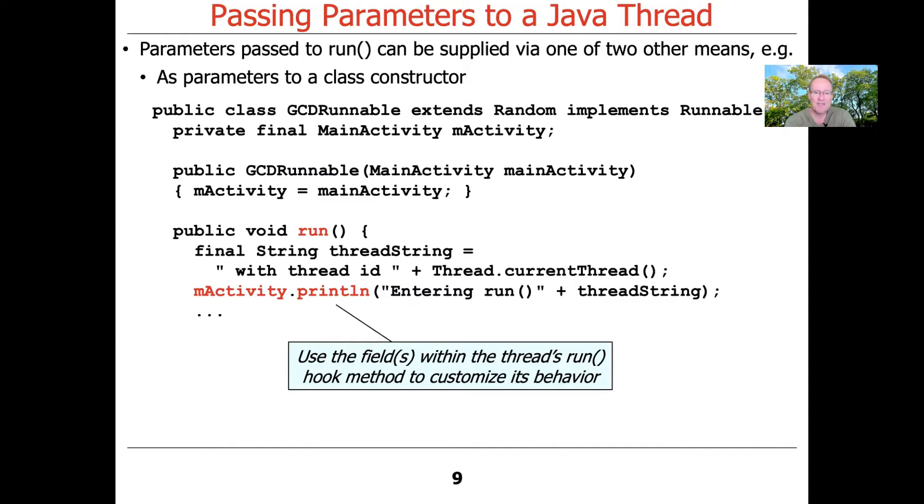Here then is the run hook method for GCD runnable. And you can see what it uses this field for is it uses this field to print information. And in this particular case, we define a helper method on our MainActivity class called PrintLin, which should look familiar to you.